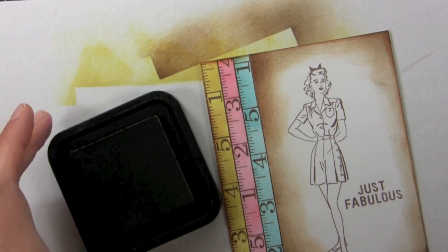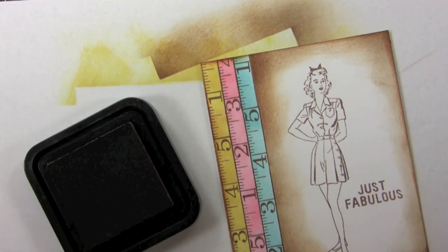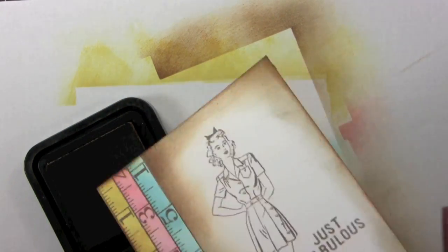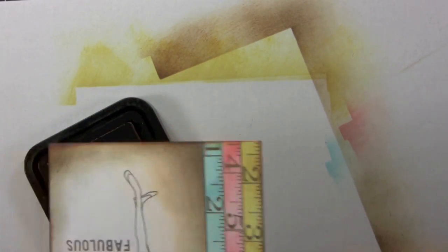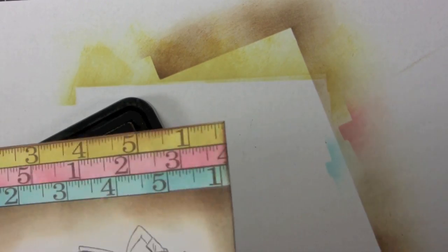Then for the final step, I'm going to take the walnut stain and go around all of the card edges to bring it all together and really make the card, make it pop on the card front.